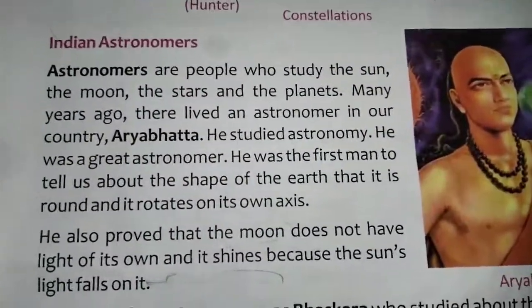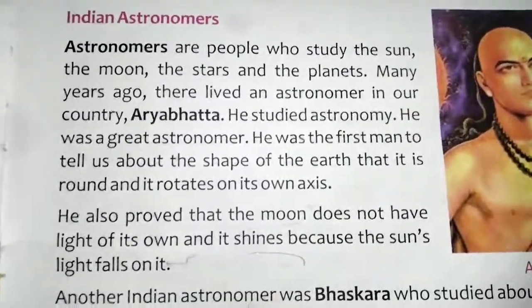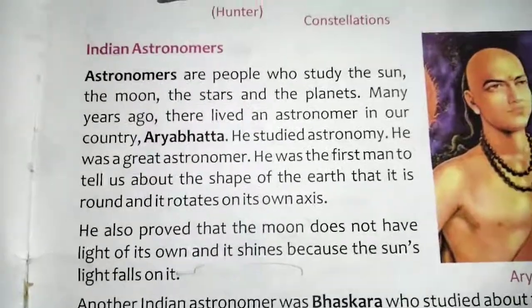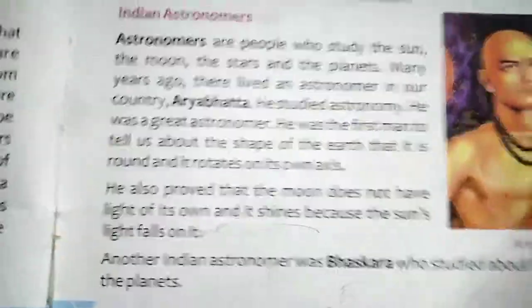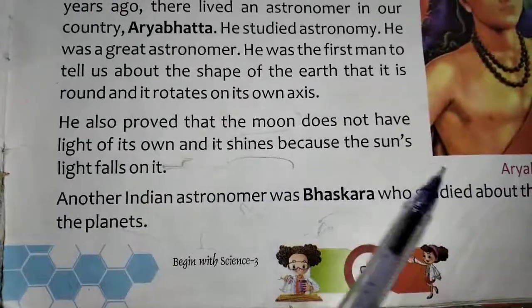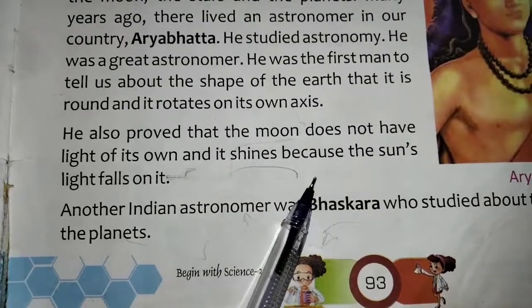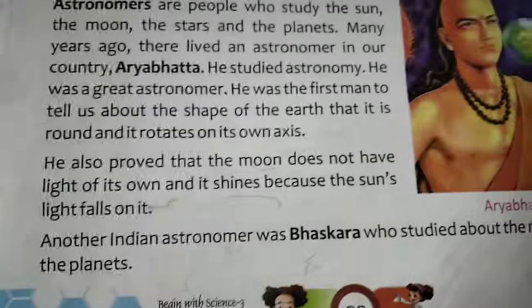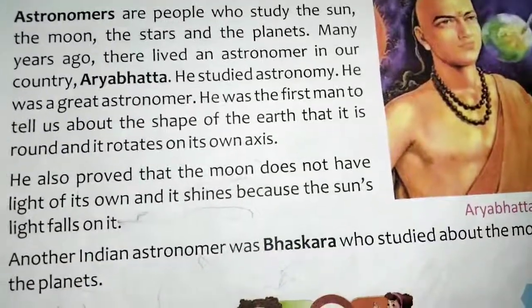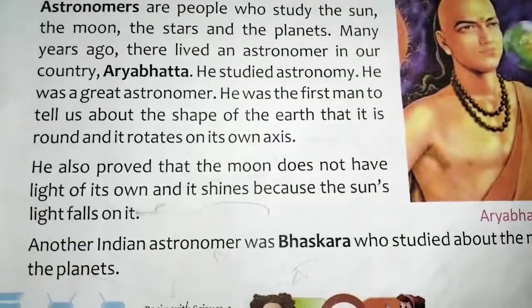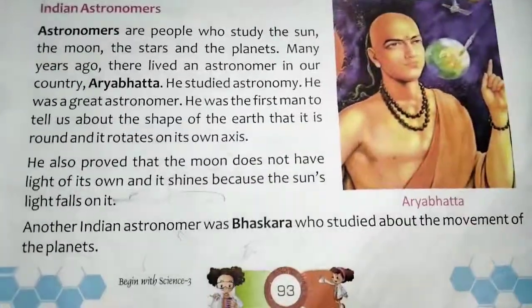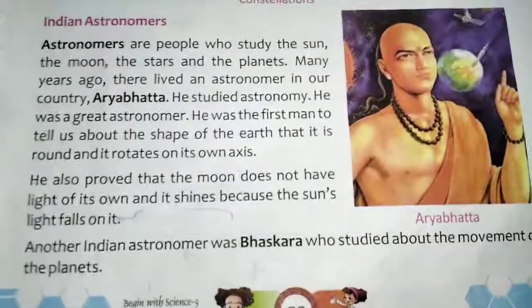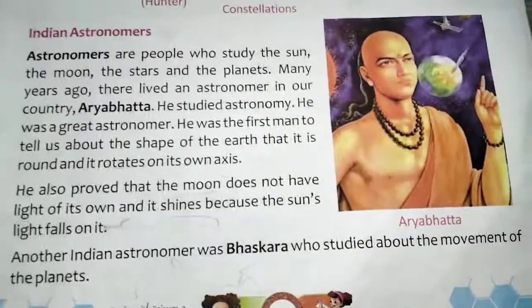Aryabhata was the first astronomer to study how the earth rotates on its own axis. He also proved that the moon does not have light of its own and it shines because the sun's light falls on it. Another Indian astronomer was Bhaskar, who studied the movement of the planets. I hope you understood, children.